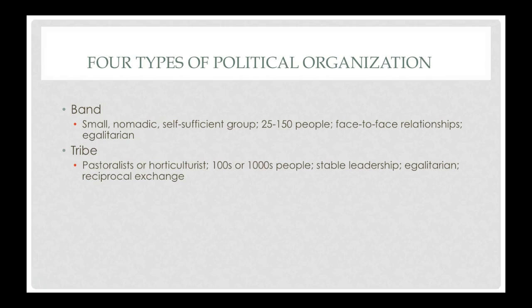Next up would be a tribe. Tribes are generally pastoralist or horticulturalist — so instead of hunters and gatherers, they are raising their own food or raising animals. They have tens to thousands of people, a stable leadership, but are still egalitarian. They focus on reciprocal exchange to maintain social relationships.